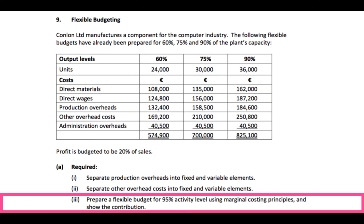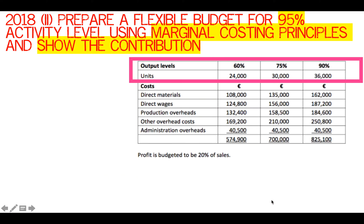Part three asks us to prepare a flexible budget for 95% activity level using marginal costing principles and show the contribution. This will be very familiar if you know question 8 on costing. In marginal costing, we take sales less variable costs to get contribution, and then take away fixed costs to get profit. We just separate out the variable and the fixed costs.